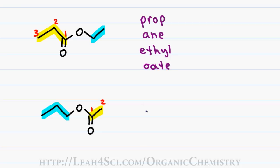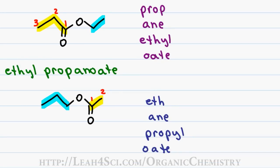For the second example, I have a first name of ETH, a last name of ANE, a 3-carbon substituent off the ester for a prefix propyl and of course the ending O8. This gives the first molecule a final name of ethyl propanoate and the second molecule propyl ethanoate.